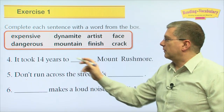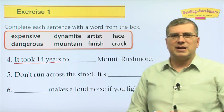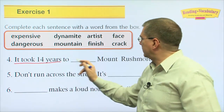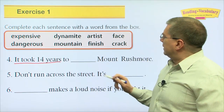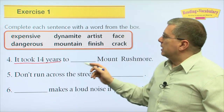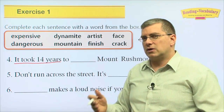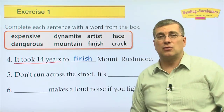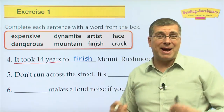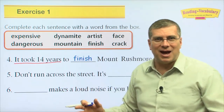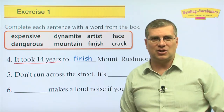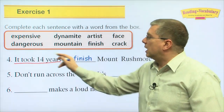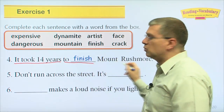Number four — it took 14 years. It took 14 years to finish Mount Rushmore. If you start something and then finish it, you can say it took a certain amount of time to finish. It took 14 years to finish Mount Rushmore. It takes a certain amount of time to finish, to complete, doing something.